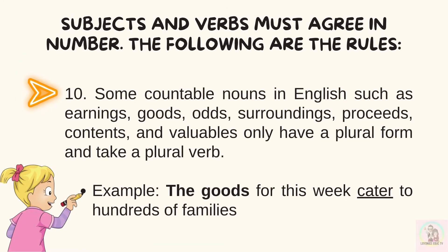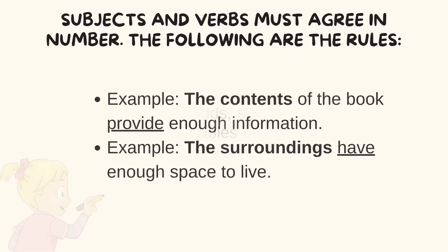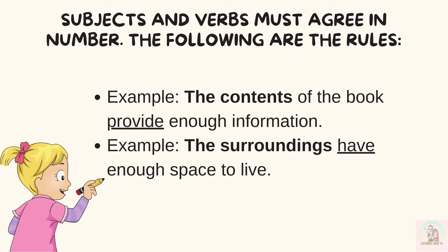Number ten, some countable nouns in English such as earnings, goods, odds, surroundings, proceeds, contents, and valuables only have a plural form and take a plural verb. Example: the goods for this week cater to hundreds of families. More examples: the contents of the book provide enough information. The surroundings have enough space to live.